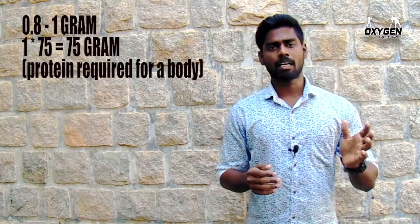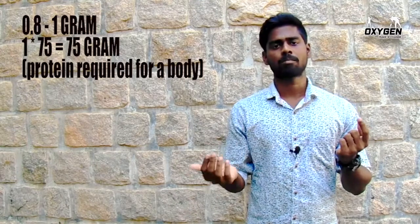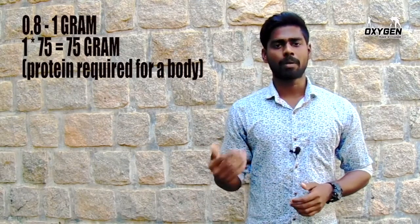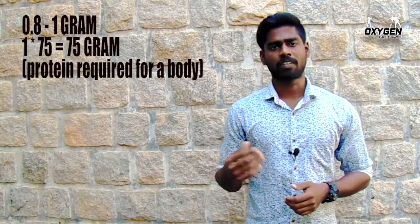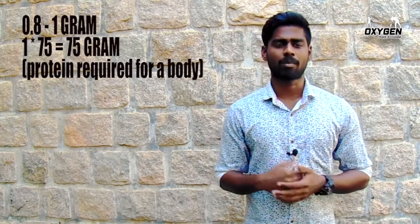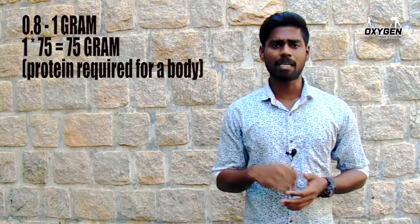So 1 gram multiplied by 75 kg gives 75 grams. For bodybuilders, fitness freaks, and calisthenics athletes, it goes up to about 3 grams per kg — so 3 multiplied by 75 gives about 225 grams. That is the protein requirement.